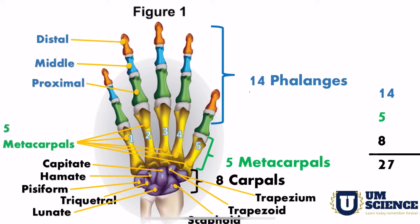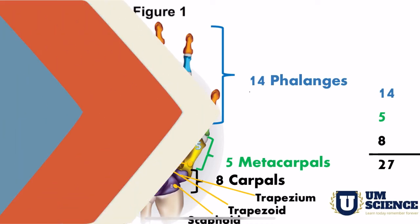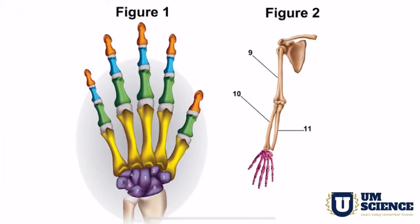So in total, 14 phalanges, five metacarpals, and eight carpals make 27 bones. But this is not the end — this is only up to the wrist area where we have 27 bones. What about bones 28 and 29?